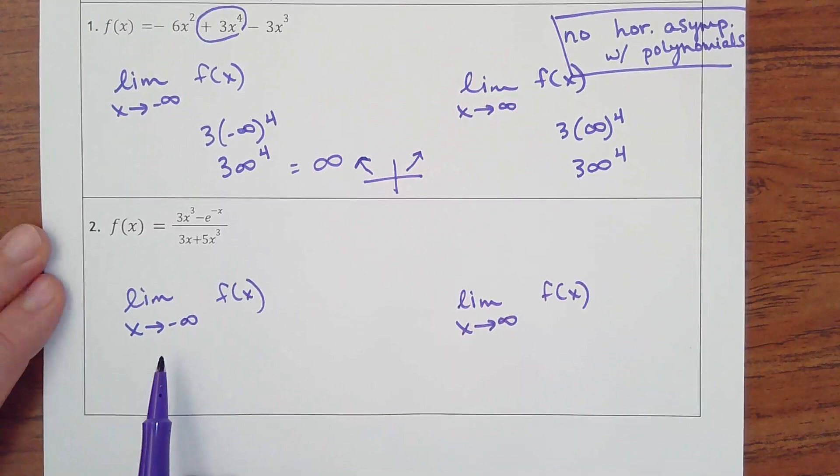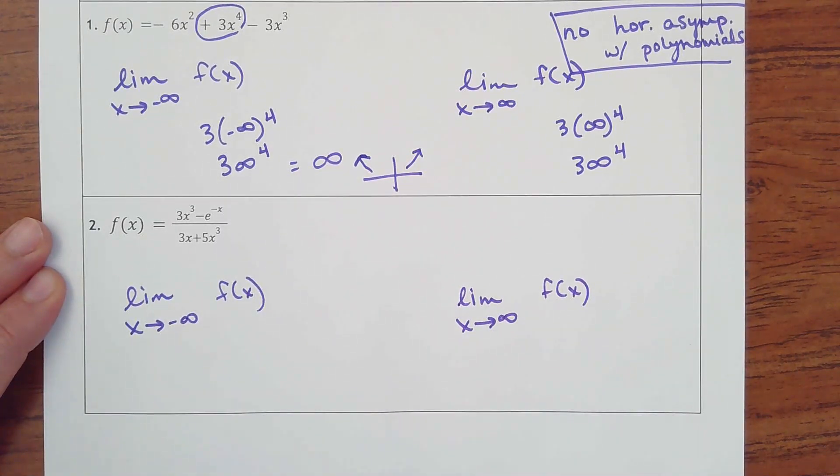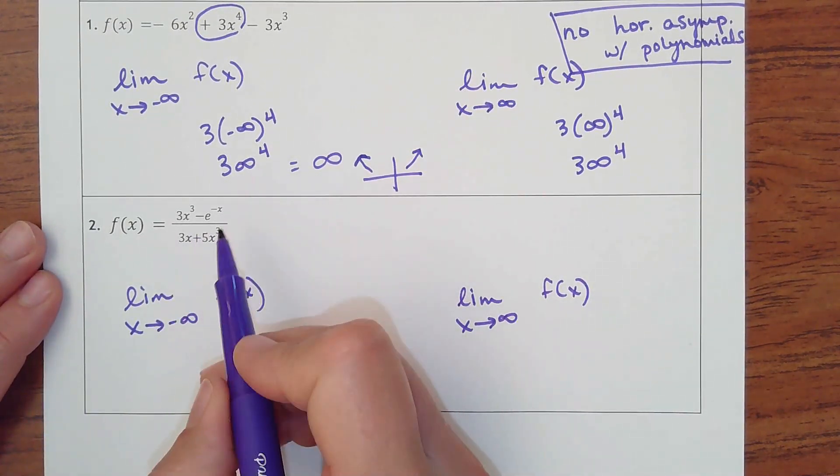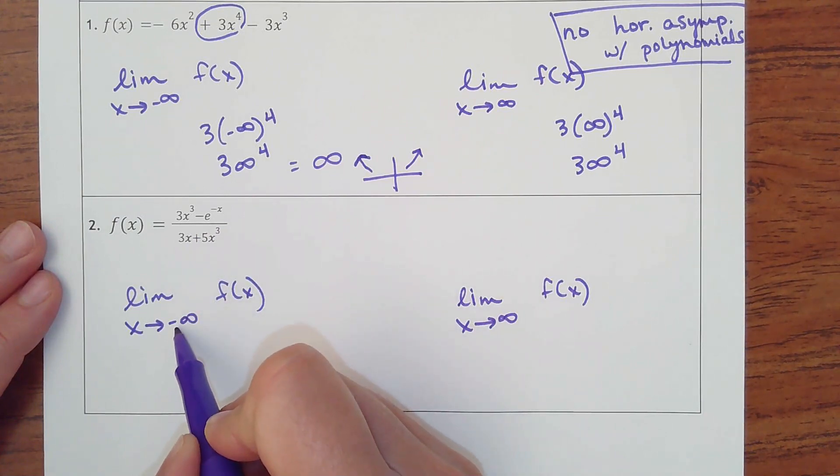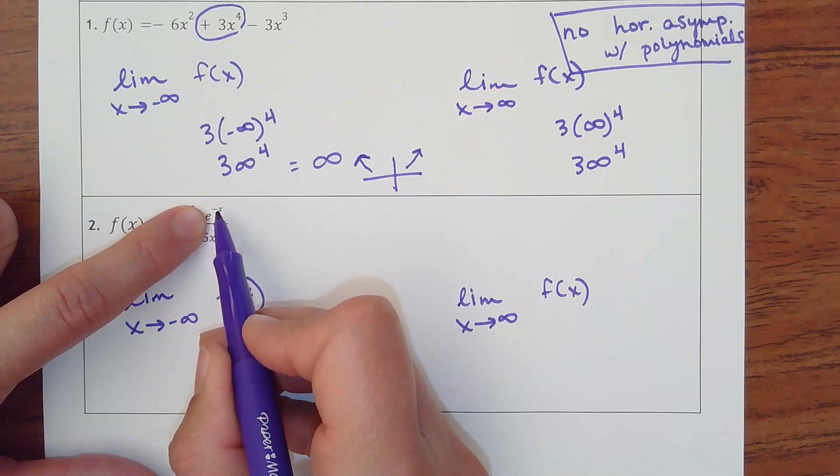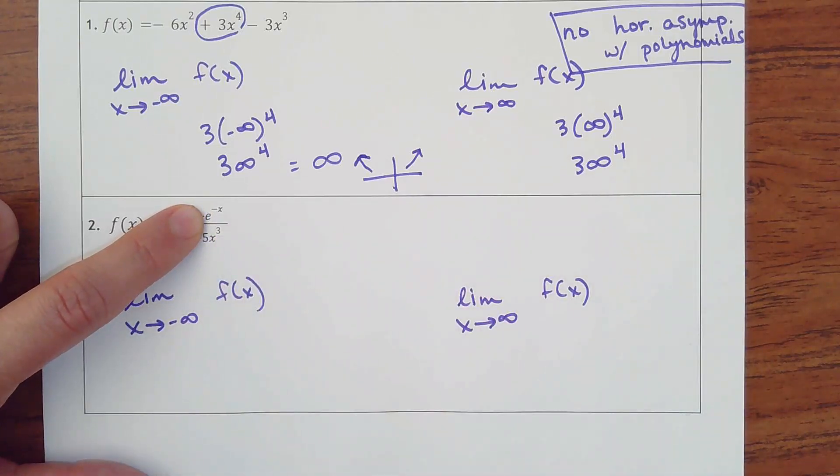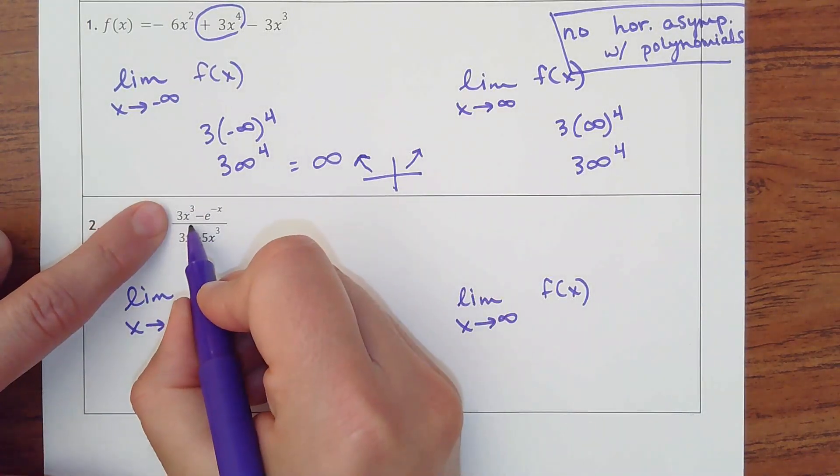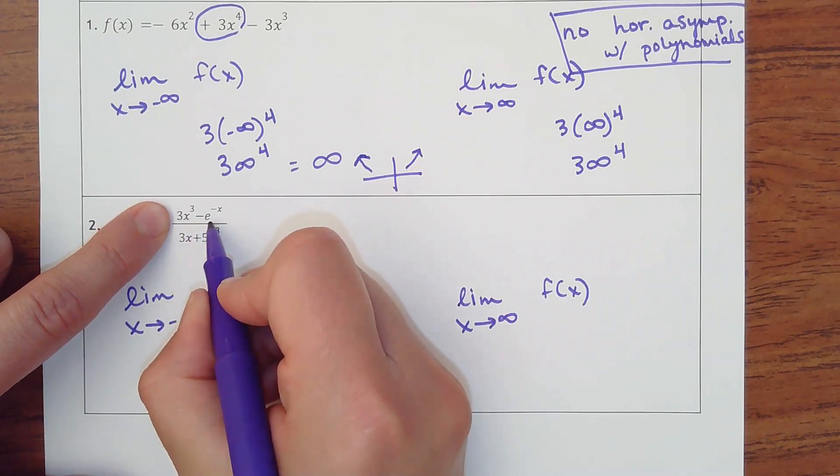So let's find the limit as x goes to the left and to the right. So on the top, it just depends what I got going on here. If I were to plug in a negative number for x, negative times negative makes a positive. e to the positive infinity is going to be bigger or grow faster than this power. So I'm going to use this.